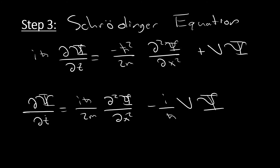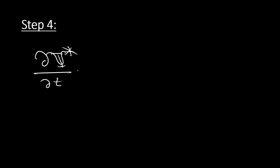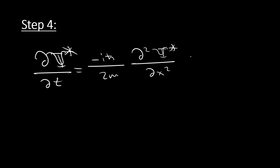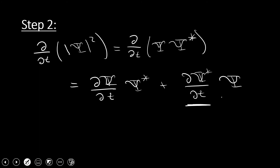With this result, we can find the partial time derivative of the complex conjugate of our wave function by simply taking the complex conjugate of our expression, which is step four. When we take that complex conjugate, we get: partial psi star partial t equals negative i h-bar over 2m times partial squared psi star partial x squared, plus i over h-bar times the potential function times the complex conjugate of our wave function. Now we have everything to substitute back in.